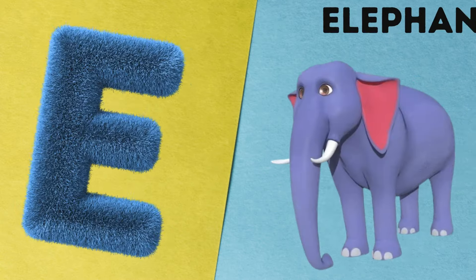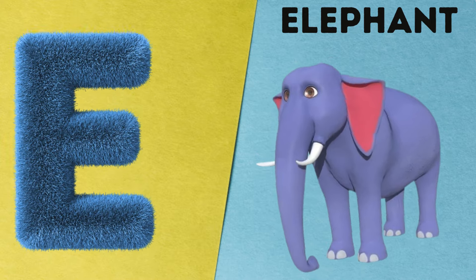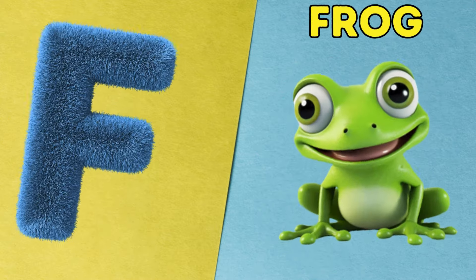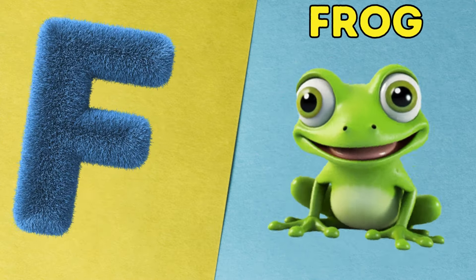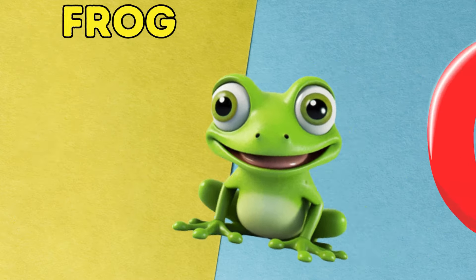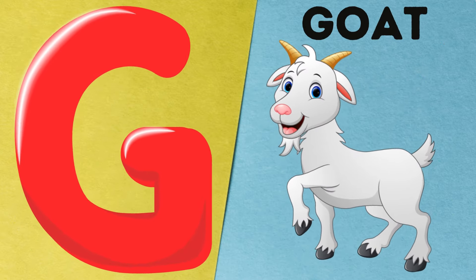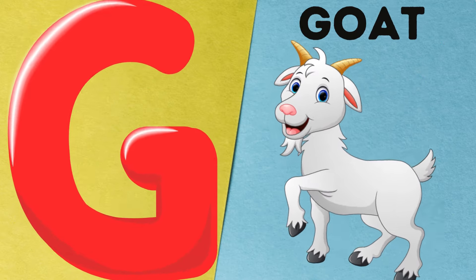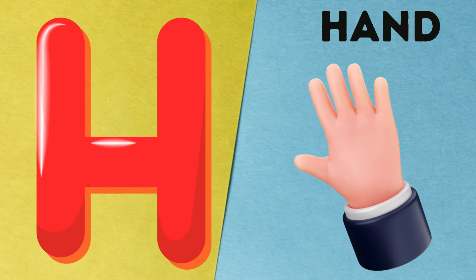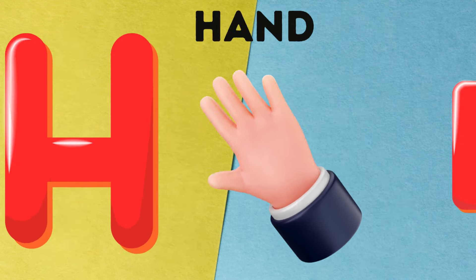E is for elephant, e-e-elephant. F is for frog, f-f-frog. G is for goat, g-g-goat. H is for hand, h-h-hand.